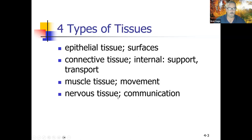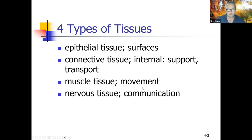There are four different types of tissue. Epithelial tissue always covers surfaces. Connective tissue is found internally and is used for support and transport — things like bone and blood are both connective. Muscle tissue always produces movement, and nervous tissue is used in communication, for example our nerves and our brain.